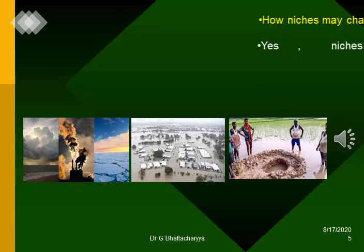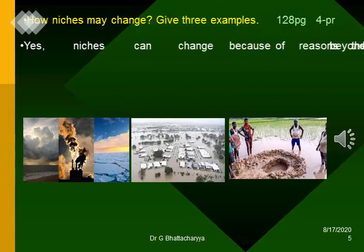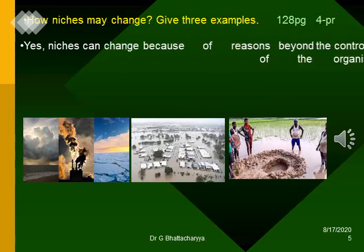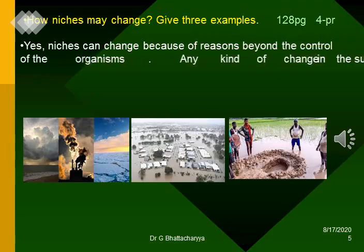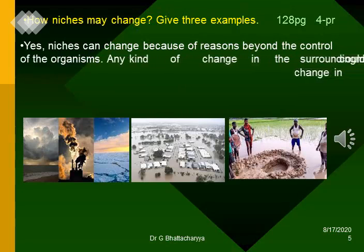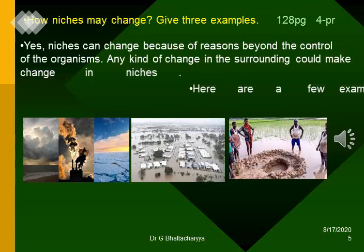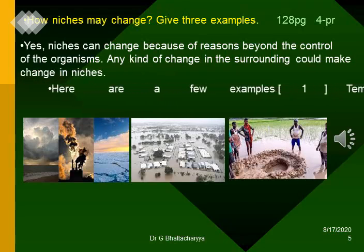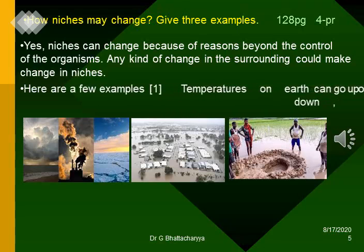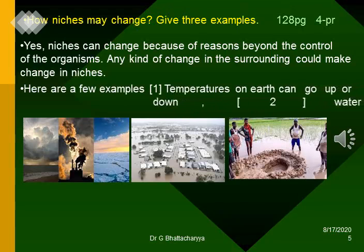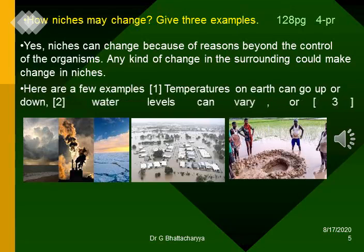How may niches change? Give three examples. Niches can change because of reasons beyond the control of the organisms. Any kind of change in the surroundings could make a change in niches. Here are a few examples: Number one — temperatures on earth can go up or down. Number two — water levels can vary. Number three — there could be meteorite hits.